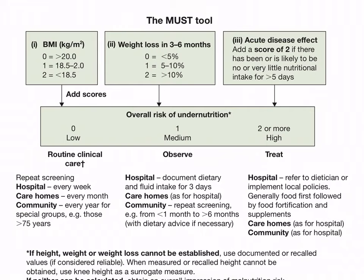For routine clinical care, repeat screening is performed: in hospital every week, in care homes every month, and in the community every year. For medium risk: document dietary and fluid intake for three days in hospital. For high risk treatment: refer to dietitian or implement local policies — generally food first, followed by food fortification and supplements. The MUST tool scores BMI (0 if >20, 1 if 18.5–20, 2 if <18.5) and weight loss in three to six months (0 if <5%, 1 if 5–10%, 2 if >10%).